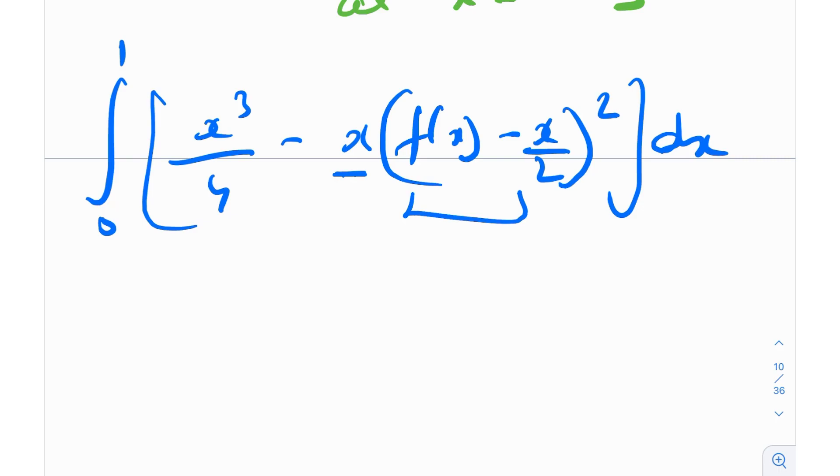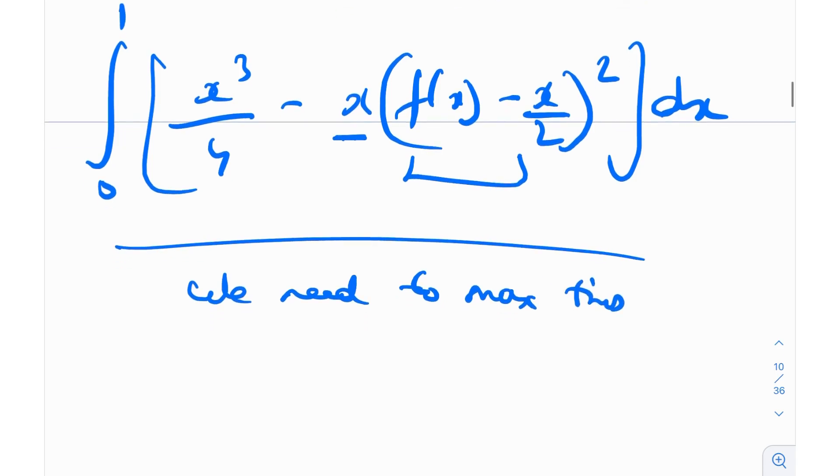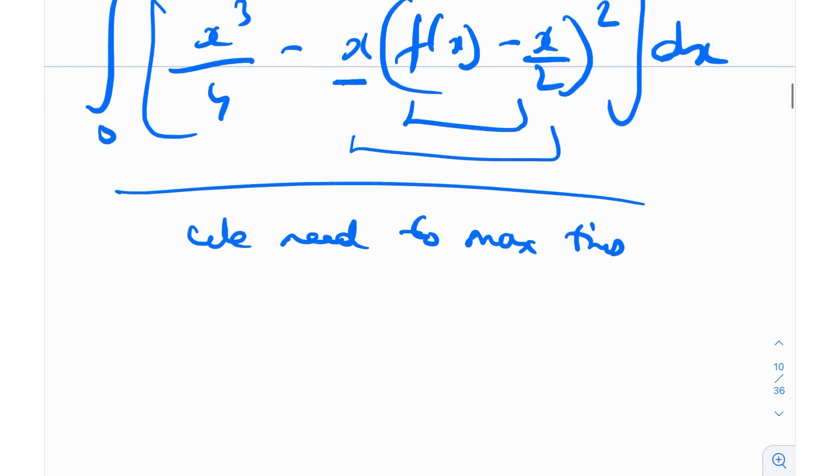A squared term is always positive, and you're multiplying that by another positive quantity. So you're always going to be subtracting something from x³/4. It's obviously going to reduce the value. We need to maximize this, but until and unless this thing is 0, you will always subtract something from x³/4, which will reduce the value. It will not be maximized.